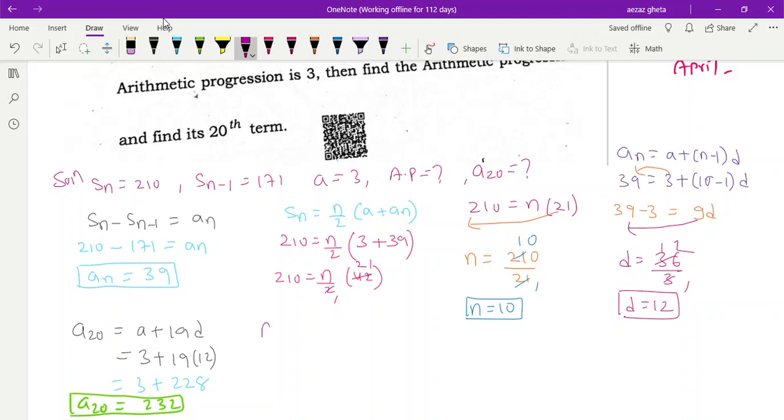Next we need to find AP. The AP, the AP is a, a plus d, a plus 2d. a is 3, d is, 3 plus 4, 3 plus 2 into 4, 3, 7, 4 twos are 8, 11. Everybody understood?